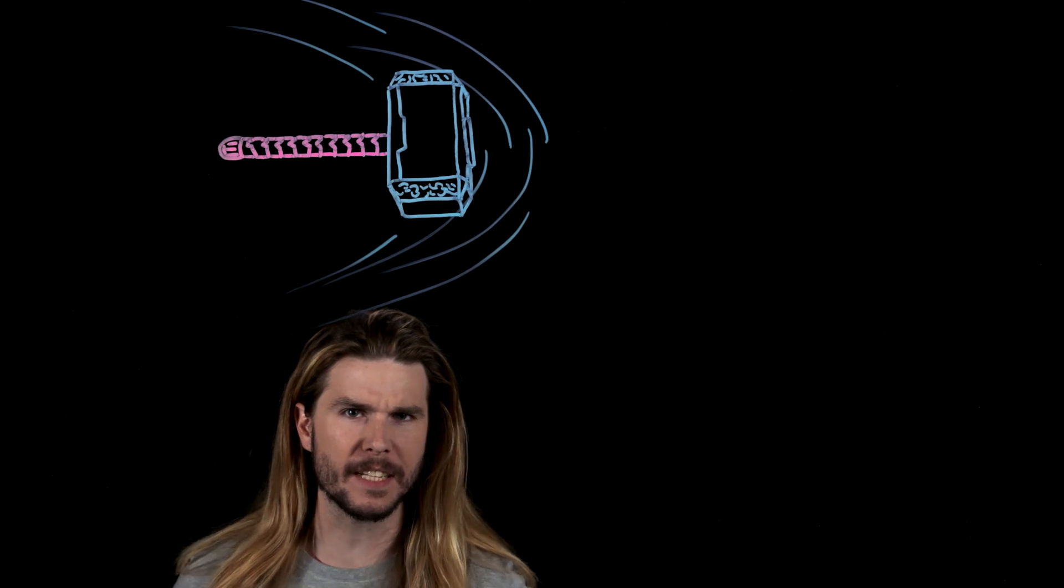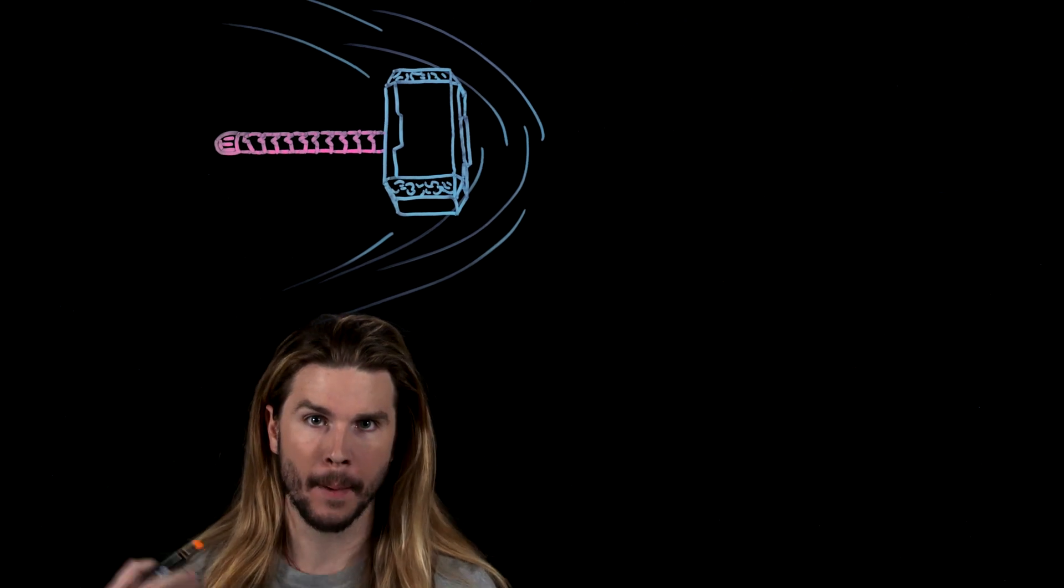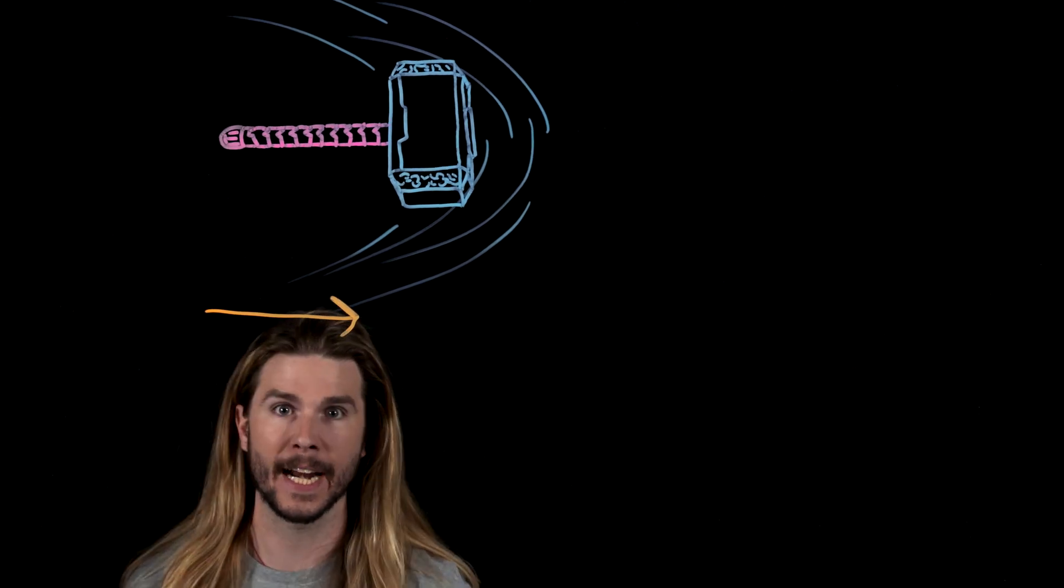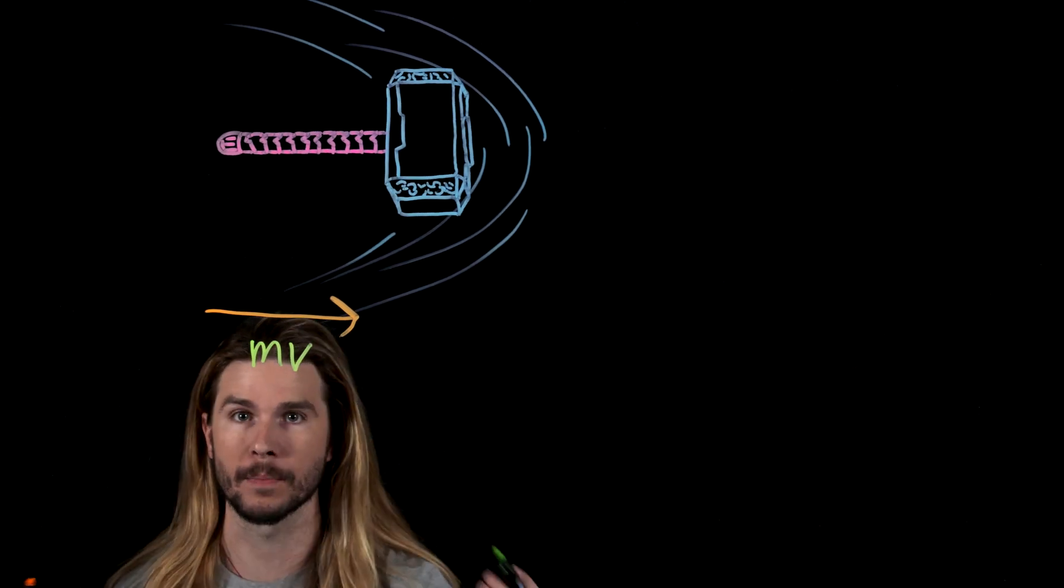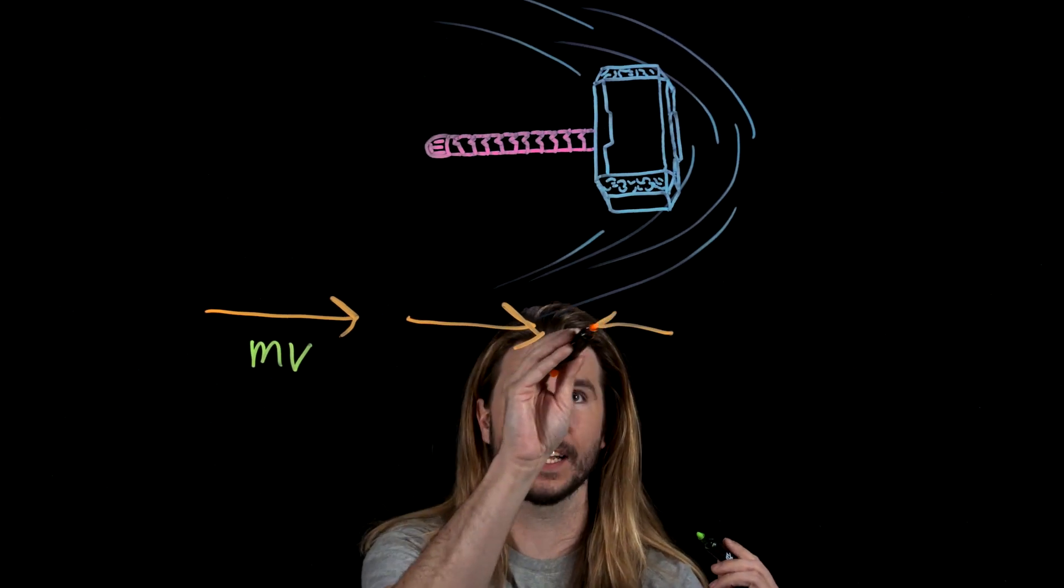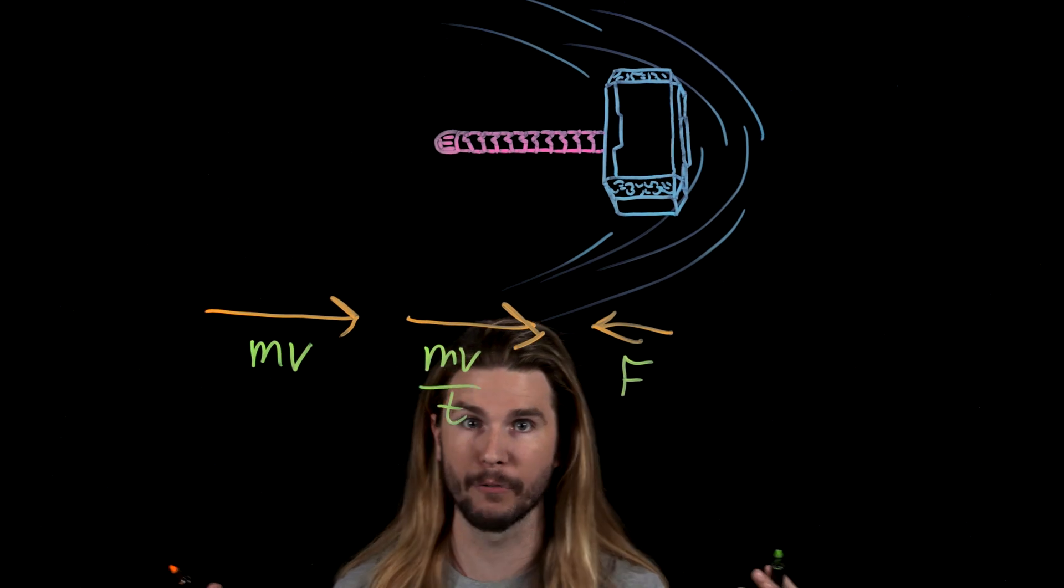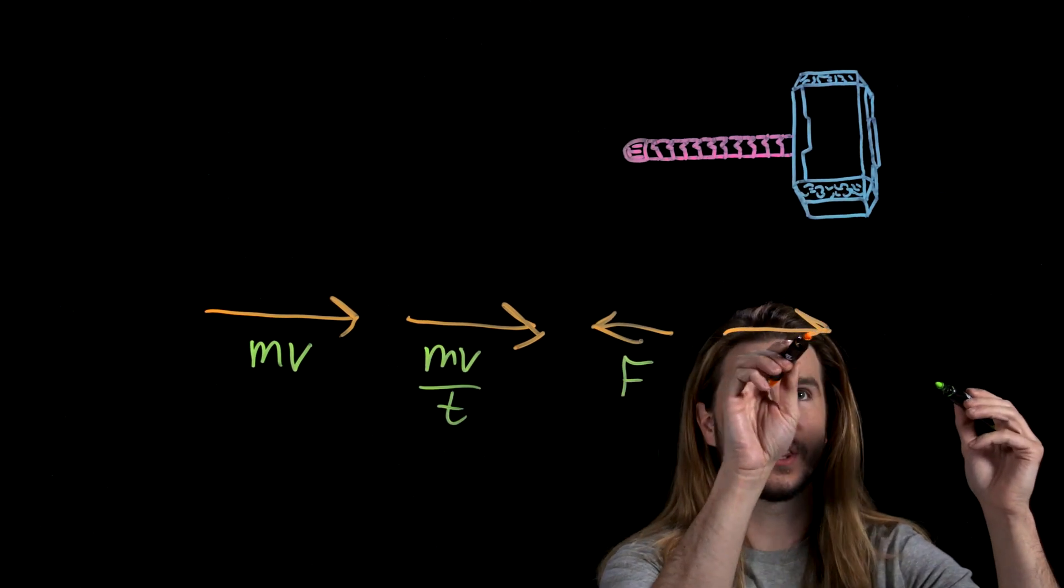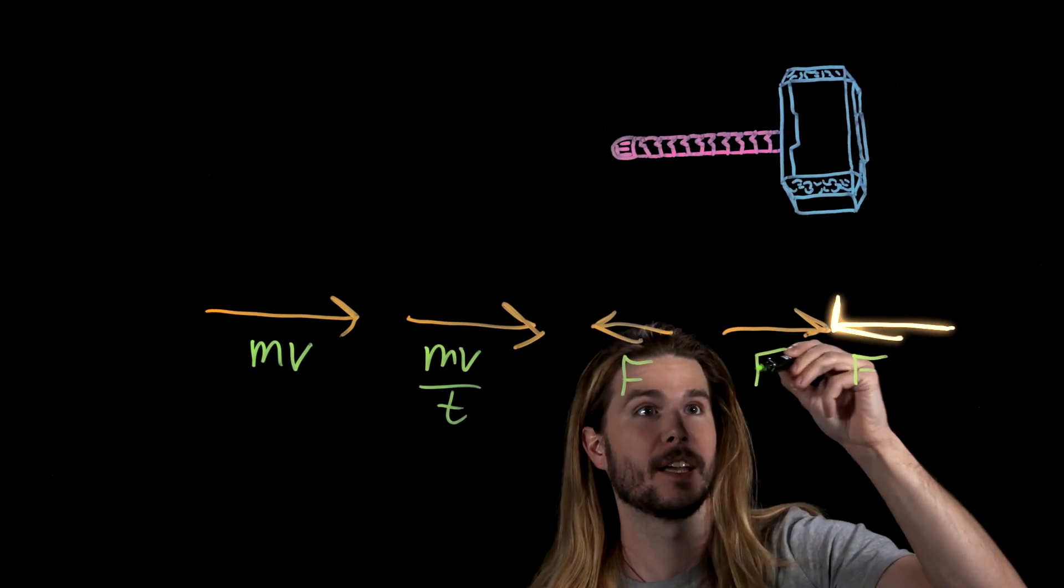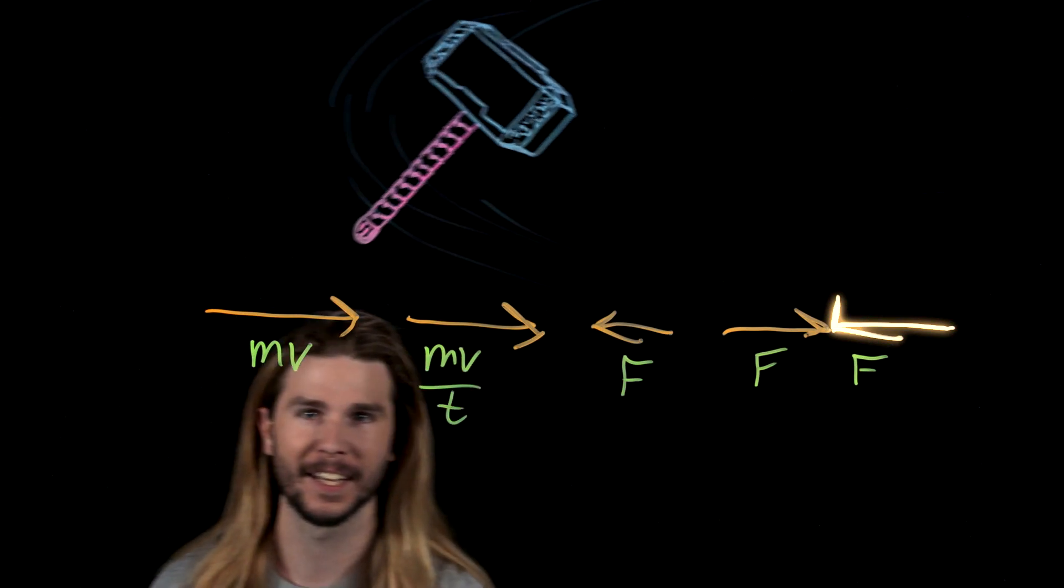And whatever this force is, it needs to be able to act on the hammer over time, because we see the hammer slow down and then accelerate back to Thor in the movie. So, it is traveling with some velocity, and it has some mass, so it has some momentum. Now, when the hammer is summoned, there will be a force put on the hammer that has to act on this momentum over time. Eventually, this force will start to take over and it gets bigger than the momentum over time that the hammer had, and then the hammer is going to start accelerating back the other way.